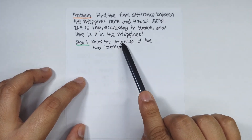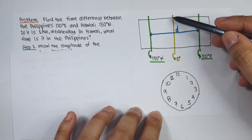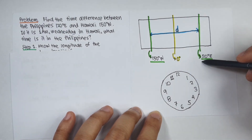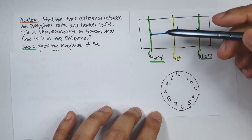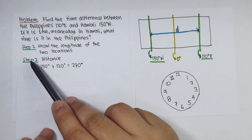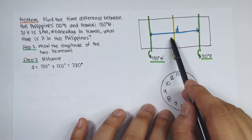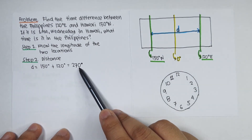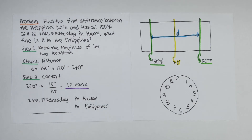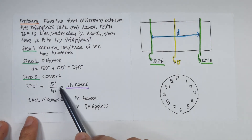Step number one is to know the longitudes of the two locations. On the world map, the Philippines is at 120 degrees east and Hawaii is at 150 degrees west. Step number two: their distance apart is 150 plus 120 degrees, which equals 270 degrees. Step number three: 270 degrees divided by 15 degrees per hour equals 18 hours.